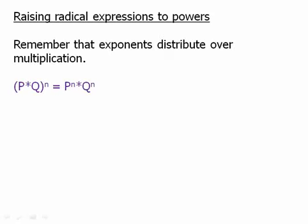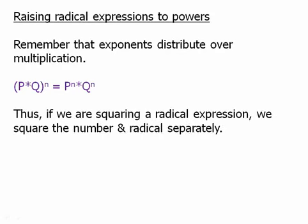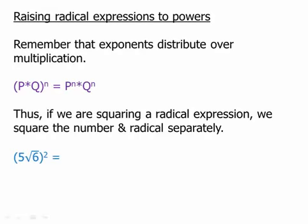Finally, we'll talk about raising radical expressions to powers. Remember that exponents distribute over multiplication. Thus, if we're squaring a radical expression, we can square the number and the radical separately. If we have (5√6)², we can just take that exponent of 2 and distribute it to each one of the factors separately. We know how to square 5, and we know how to square √6. We square the 5, we get 25. We square the √6, we get 6. Multiply those, we get 150.